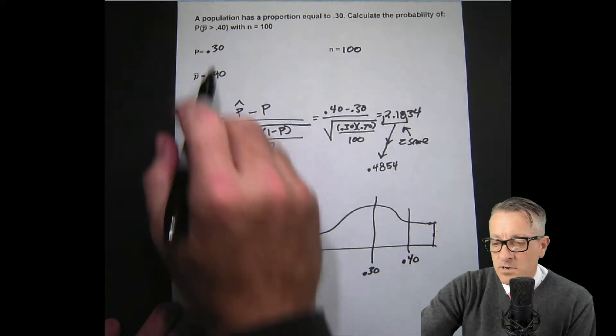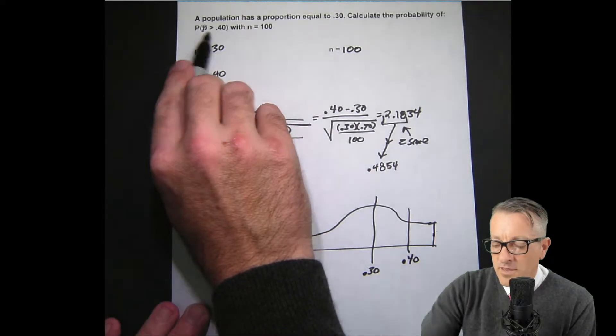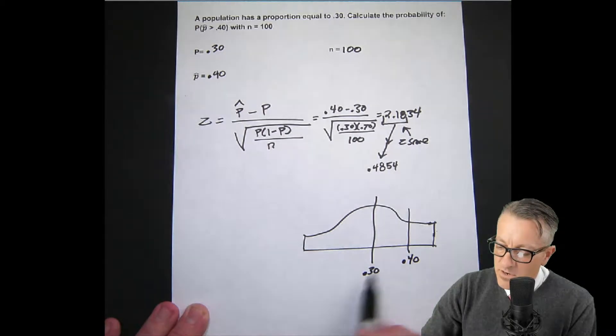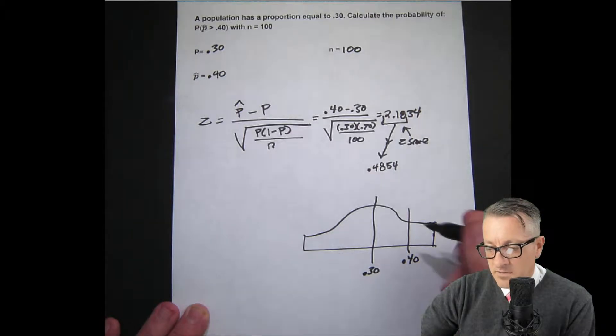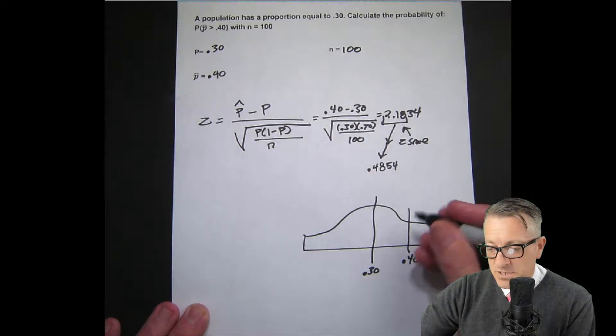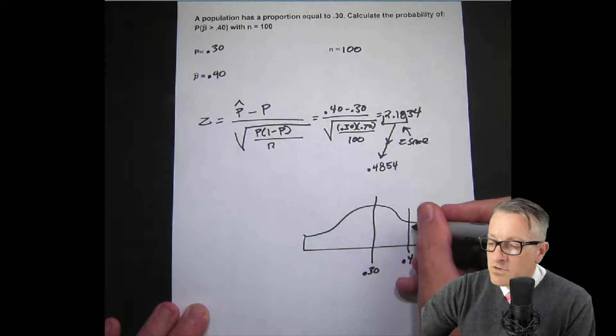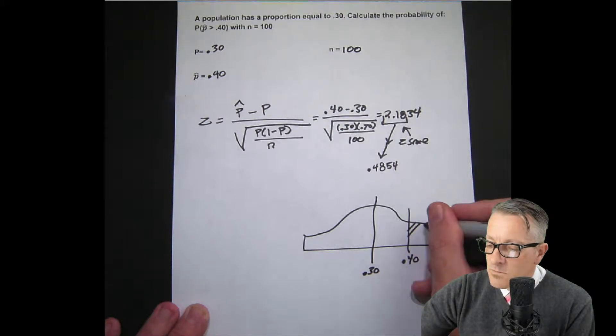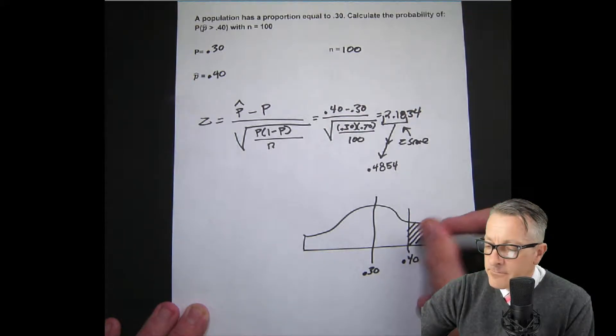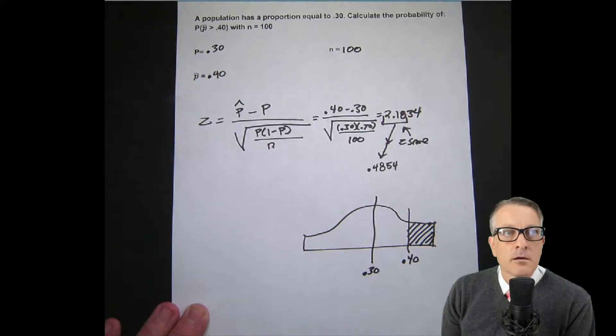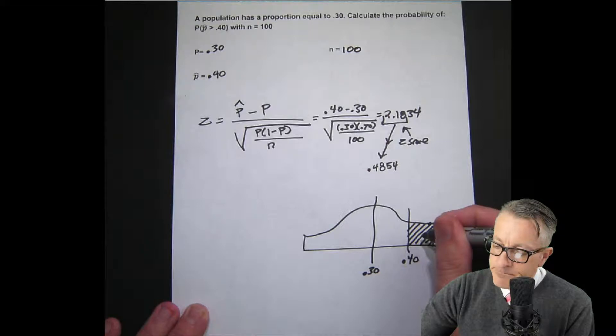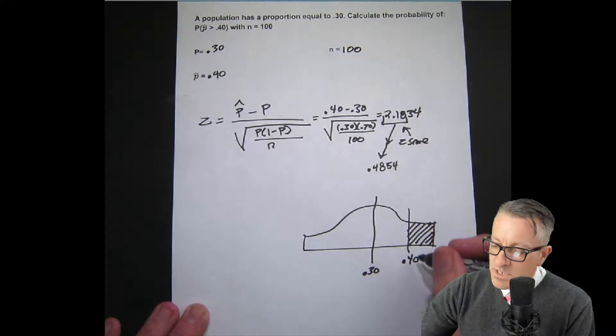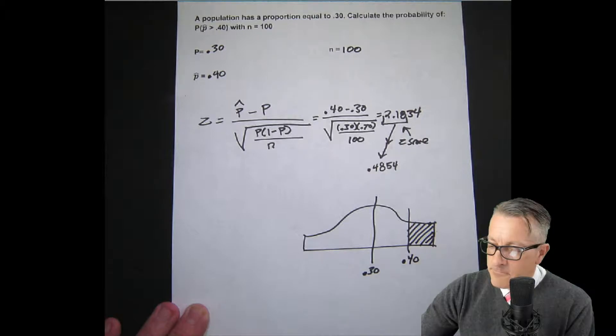We're going to figure out, so greater than. If this is greater than, then our area of interest, if we're doing rejection type calculations I'd call this the rejection zone, but in this case I call it the area of interest. So I'm shading right here. This is our area of interest. We're trying to find the probability of this area, which is greater than 0.40.